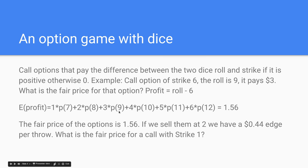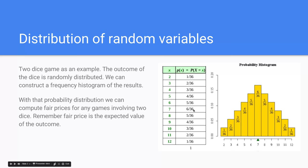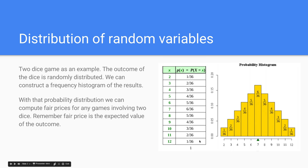The price of the option for this particular game only depends on the strike, because the probabilities are always the same. Based on the strike, you will have different expected values. For instance, the call option at strike 12 costs zero because you will never make money on it. But the call option at strike 11 will only pay money if you roll a 12, and it will only pay you 1 buck. You can see from the table that the probability of rolling a 12 is 1/36. So this option is priced at 1/36 — which is very cheap, because it will only pay you 1 buck and it is very unlikely to pay at all. That is the fair price.